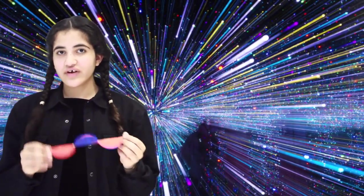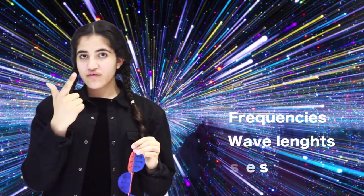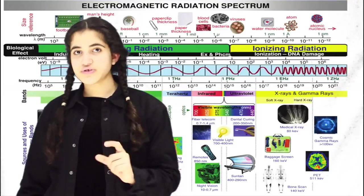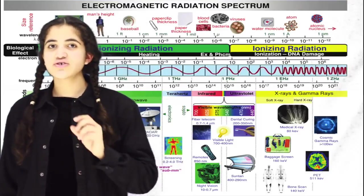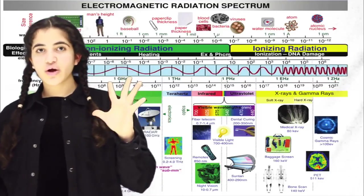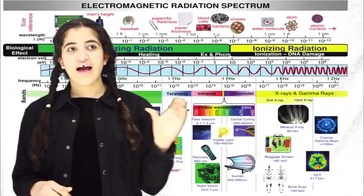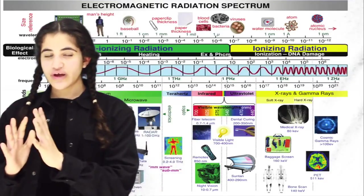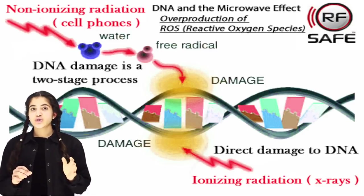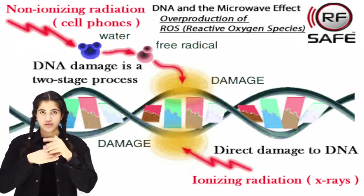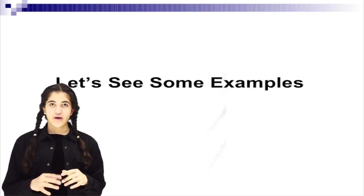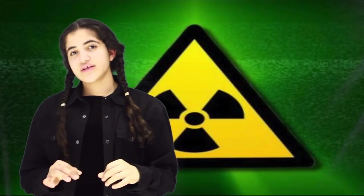Electromagnetic waves have different frequencies, wavelengths, and uses, as we can see in the electromagnetic spectrum. They are ordered from non-ionizing to ionizing, and from low frequency with long wavelength to high frequency with short wavelength. Ionizing means having the ability to break a bond between molecules.